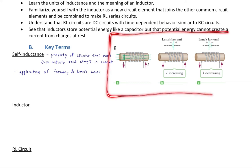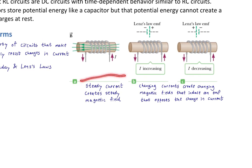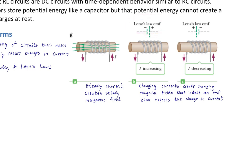Looking at this diagram — this is a solenoid. A steady current creates a steady magnetic field that is strong inside the coil and very weak outside. But what we're talking about here is when the current is either increasing or decreasing, because changing currents create changing magnetic fields that induce an EMF that opposes the change in current. If the current is increasing, the induced Lenz's law EMF opposes the current direction — it doesn't want the current to increase, so it slows down the increase.